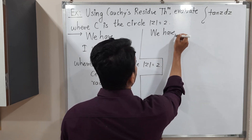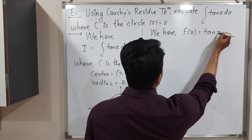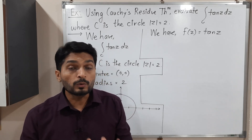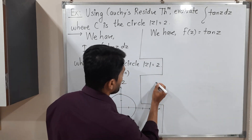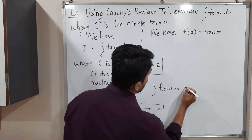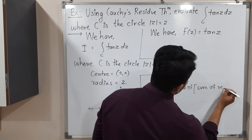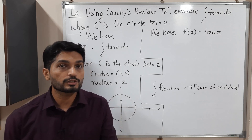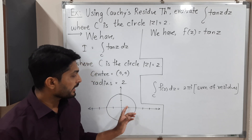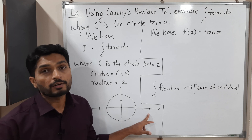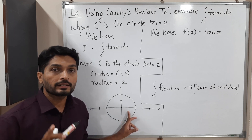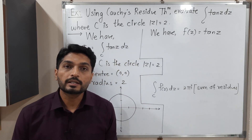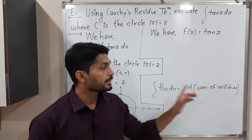We have f(z) = tan(z). We have to solve this integration with the help of Cauchy's residue theorem. The statement says: ∮_C f(z) dz = 2πi × (sum of residues). We find the singular points of the given function — points where the function is not analytic — and check which lie inside or outside the circle. If outside, no residue needed; if inside, we find the residue at each such point, sum them, multiply by 2πi.